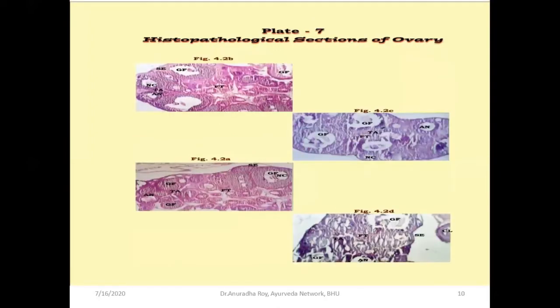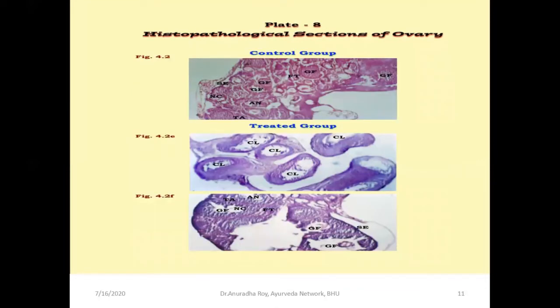The same procedure was applied to the ovary, with sections taken to assess any changes in ovarian tissue. These ovarian sections show a clear comparison between the control group and the treated group. In the control group, corpus luteum sections of the ovary are visible, which are suggestive of the estrus phase of the cycle.